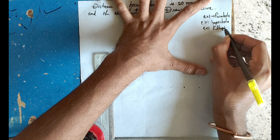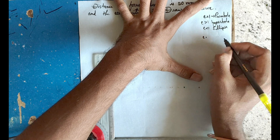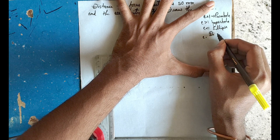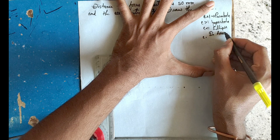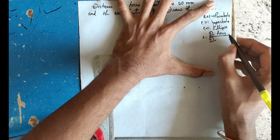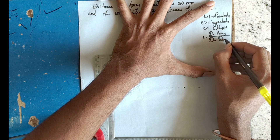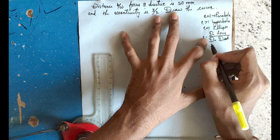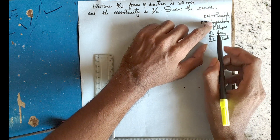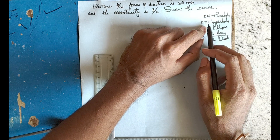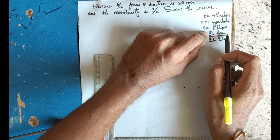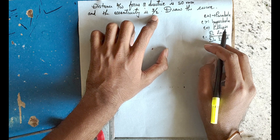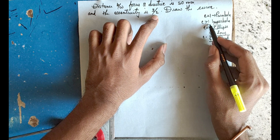If eccentricity is less than 1, it is an ellipse. Eccentricity is defined as the ratio of the point's distance from the focus to its distance from the directrix. Since eccentricity here is 3 by 2, which is greater than 1, this is a hyperbola.